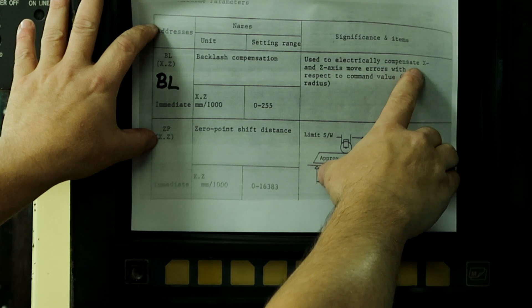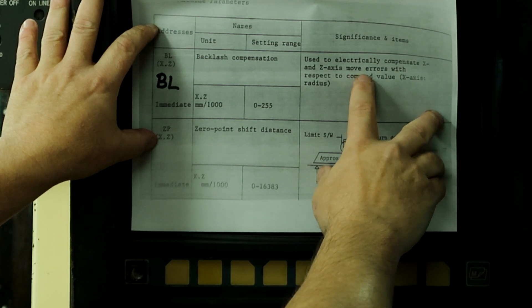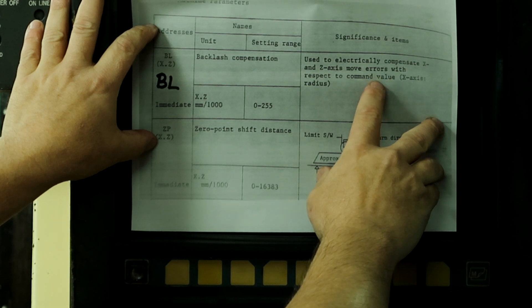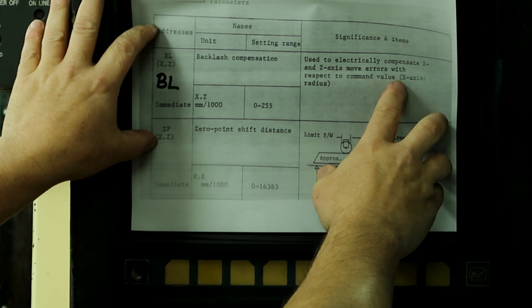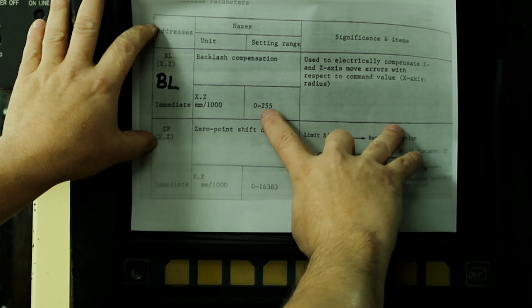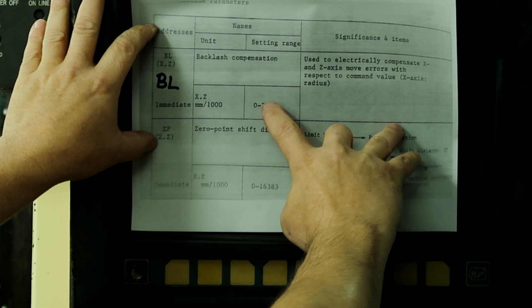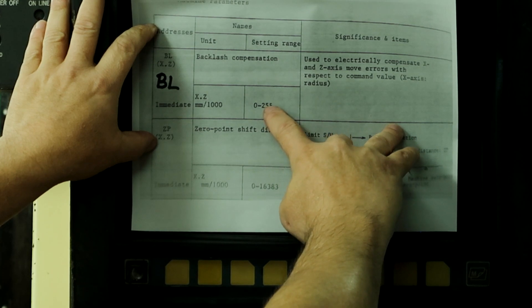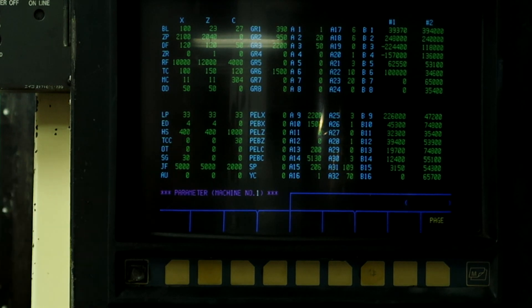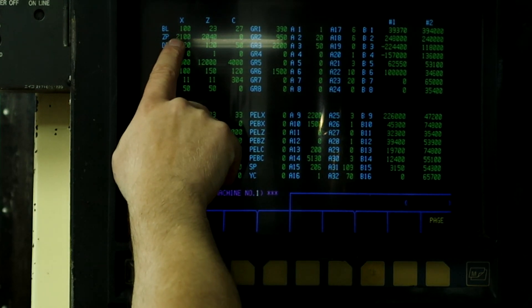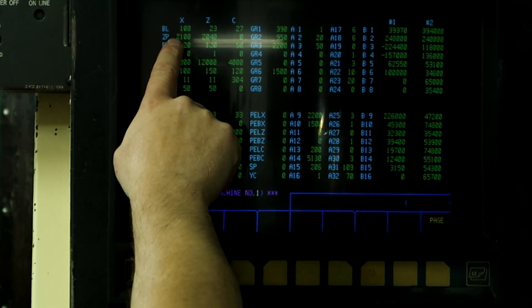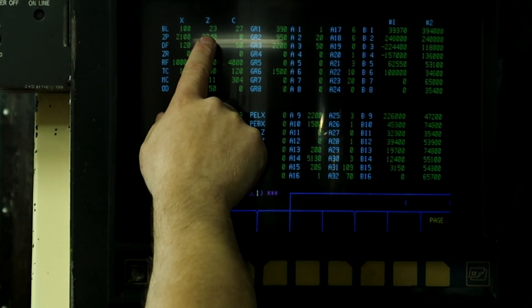Used to electrically compensate the X and Z axis move errors with respect to the command for programming. The X axis value is a radius, and it's 0 to 255 on the setting range, but we're not ever going to be near that high. So right now, my backlash is dialed in on this machine at 100 on X and 23 on Z.